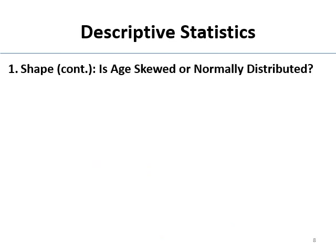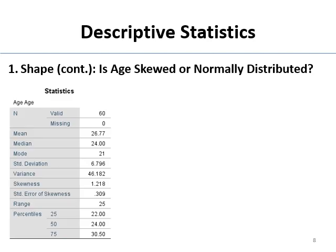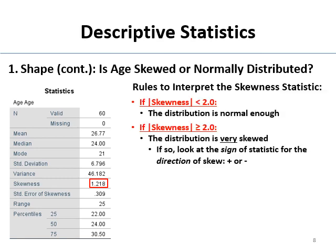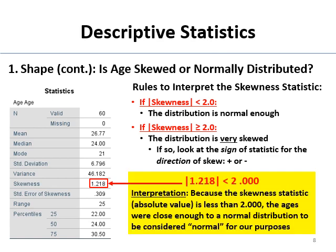Let's go back to age from my intro class. This is SPSS spitting out stats for us, and that is the skewness coefficient. So is age skewed or not? We're looking to see if the absolute value is two or bigger. It's already positive — is 1.2 bigger than two? No, it's not. So our conclusion would be: normal enough. Because the skew statistic's absolute value is less than two, the ages are basically normal. That's what I want you to say on your homeworks and tests — it's good enough for us to just pretend it's not skewed.